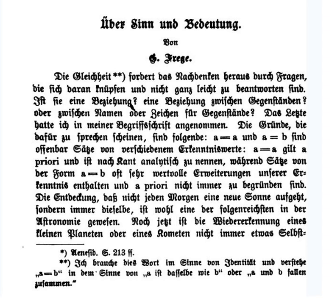Second, sentences that contain proper names with no reference cannot have a truth value at all. Yet the sentence "Odysseus was set ashore at Ithaca while sound asleep" obviously has a sense, even though "Odysseus" has no reference. The thought remains the same whether or not "Odysseus" has a reference. Furthermore, a thought cannot contain the objects that it is about. For example, Mont Blanc, with its snowfields, cannot be a component of the thought that Mont Blanc is more than 4,000 meters high. Nor can a thought about Etna contain lumps of solidified lava.